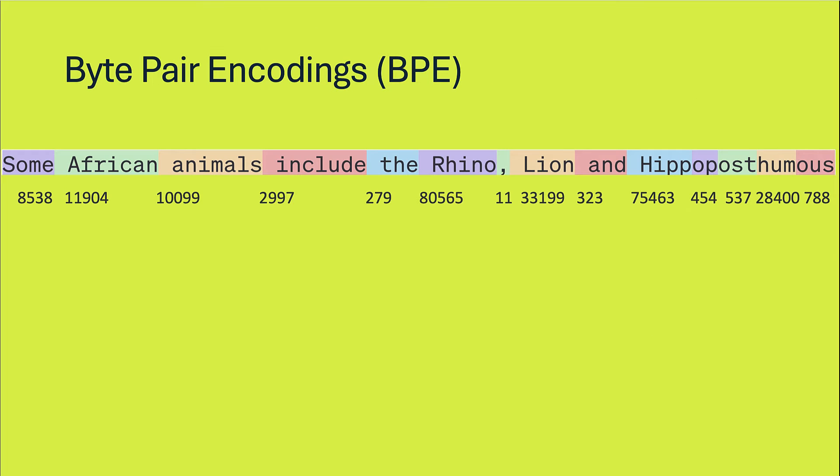So instead, LLMs use byte-pair encodings. These encodings are unique identifiers for whole words, parts of words, or symbols that are frequently seen in text. Generally, the lower the number, the more frequently it occurs. And also, it's case-sensitive.